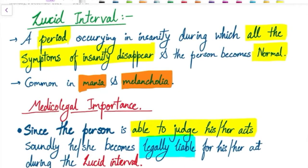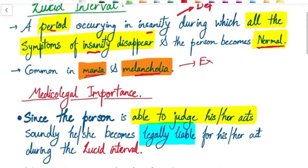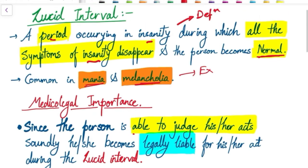We are discussing lucid interval. Lucid interval is a period occurring in insanity during which all the symptoms of insanity disappear and the person becomes normal. It is commonly seen in mania and melancholia. The medico-legal importance is that during this period the person is able to judge his or her acts soundly, meaning the person is not insane for that period.